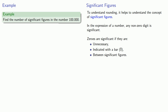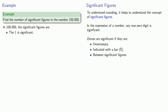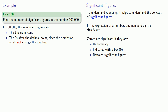How about the number of significant figures in the number 100.000? The 1 is significant because it's a non-zero digit. The zeros after the decimal are actually unnecessary — if we omit them, we don't change the value of the number. The fact that they were written is indicative that they are important.